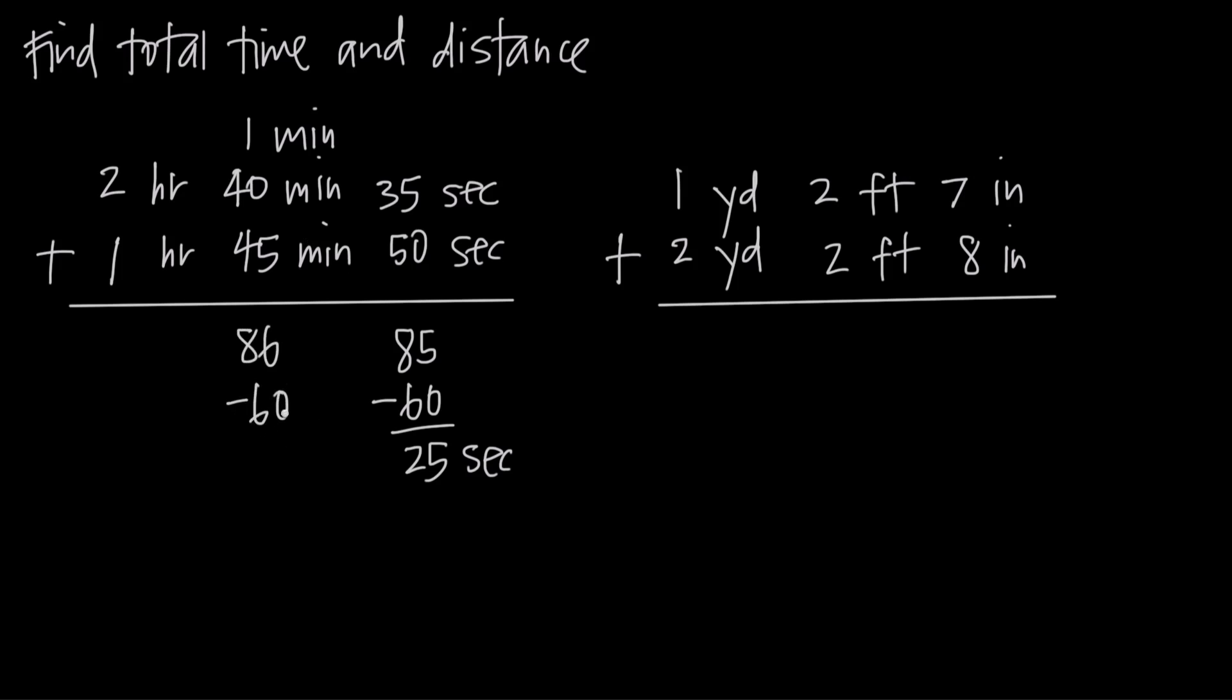When we subtract 60 minutes, that's the same as an hour, so we carry it over to hours. 86 minus 60 gives us 26. Since 26 is less than 60, in other words less than an hour, we have 26 minutes.